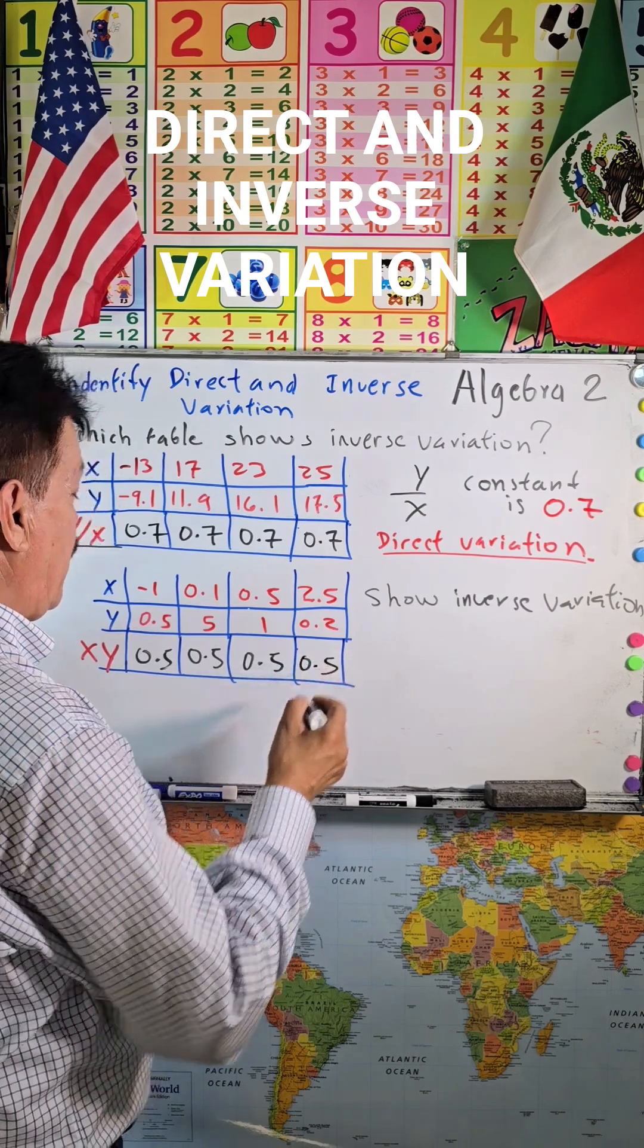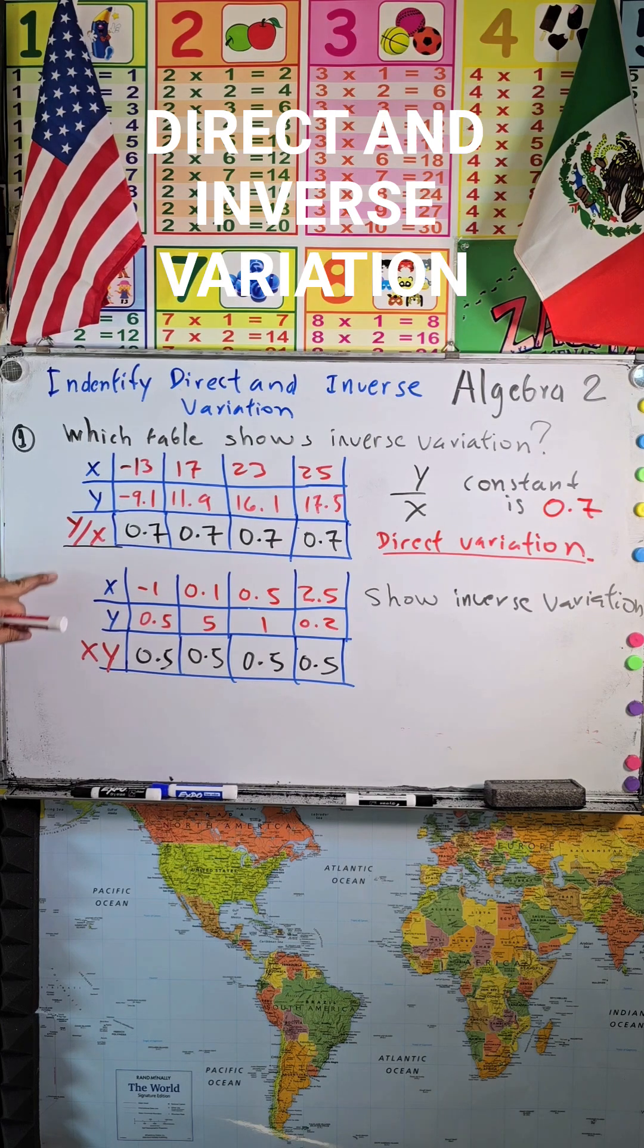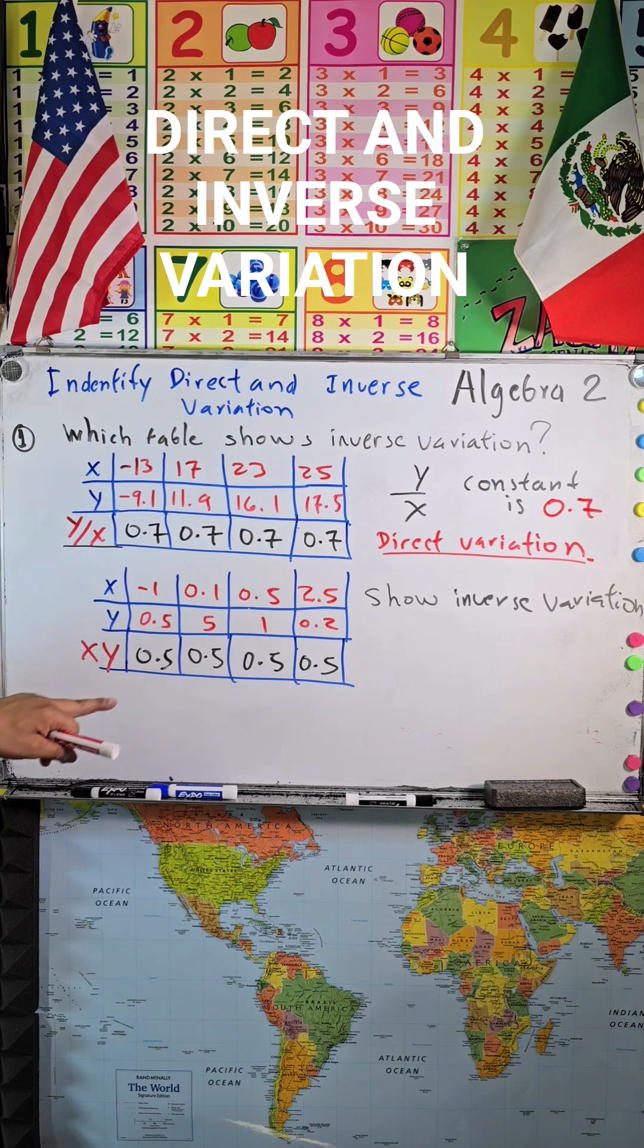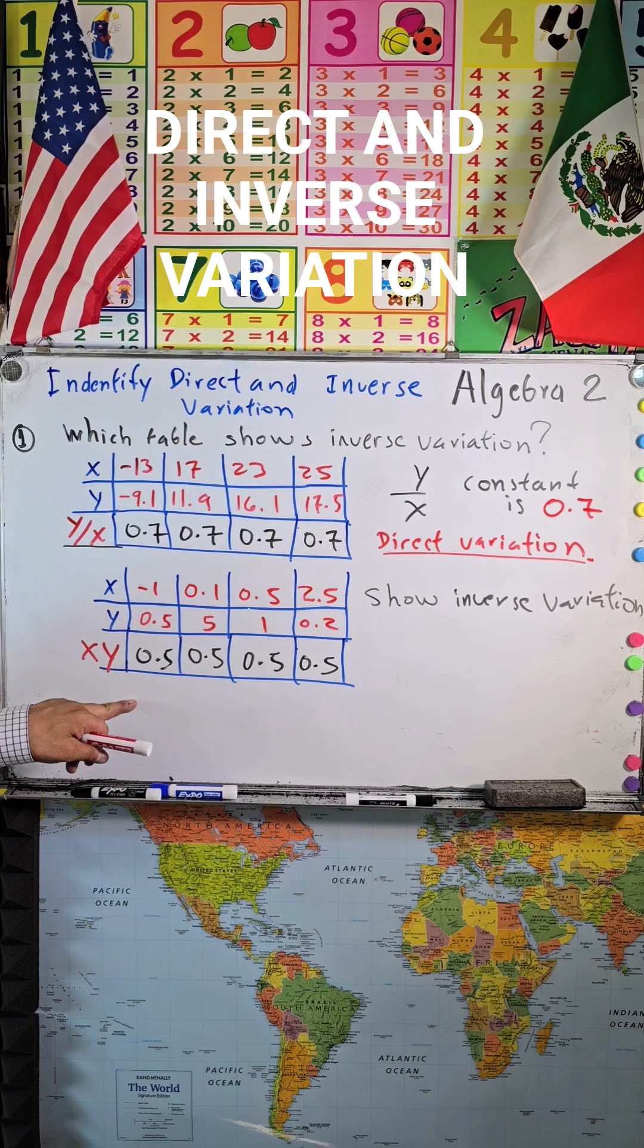But here, if this is division, here is multiply. We are multiplying. It's the same constant, right? So the second table shows inverse variation. Under the y, because here you divide, here you multiply.